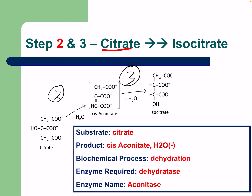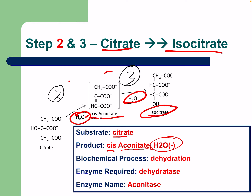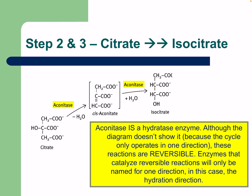Steps two and three involve going from citrate to isocitrate, with the intermediate cis-aconitate acting as a bridge. Water is first lost then added — a dehydration followed by hydration — converting cis-aconitate to isocitrate. The enzyme is aconitase, which is a hydratase enzyme. Although the diagram shows only one direction, these reactions are reversible; the enzyme is named for the hydration direction. In practice, steps two and three are often combined, going directly from citrate to isocitrate.